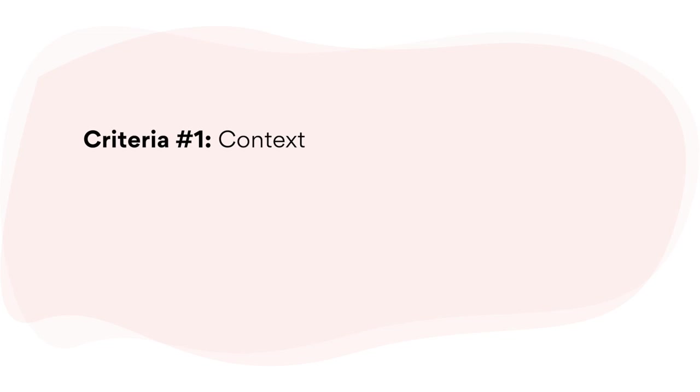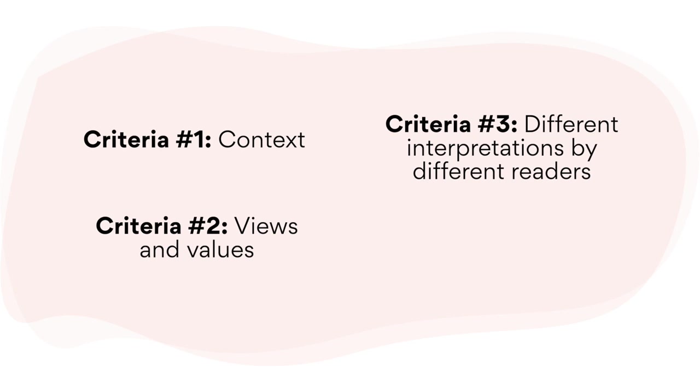I'm going to move beyond the basics, like making sure that you answer the prompt, which is a given. I'm going to include the finer details that you need to include in your essay. So what are they? Criteria one: context. Two: views and values. Three: different interpretations by different readers. And four: meta-language. By knowing and incorporating these four points into your essay writing, you'll be able to advance your essays from basic discussion solely about themes and characters to an insightful showcase of your interpretation of the author's work. Let's get a better understanding of each of these points and how they add to your analytical interpretation of a text.